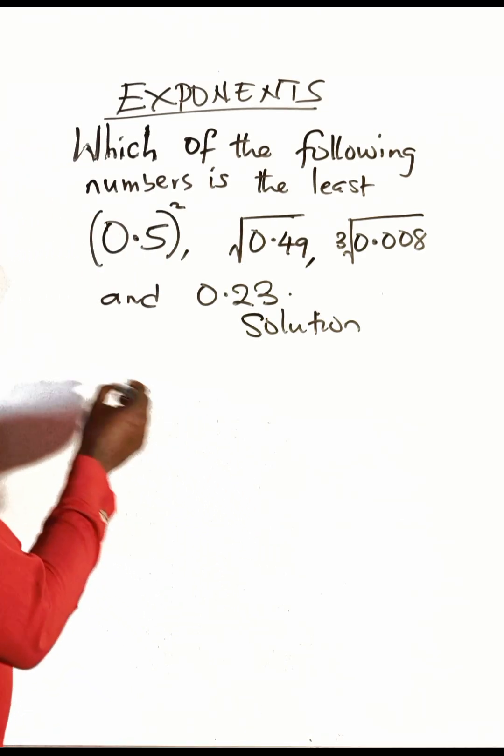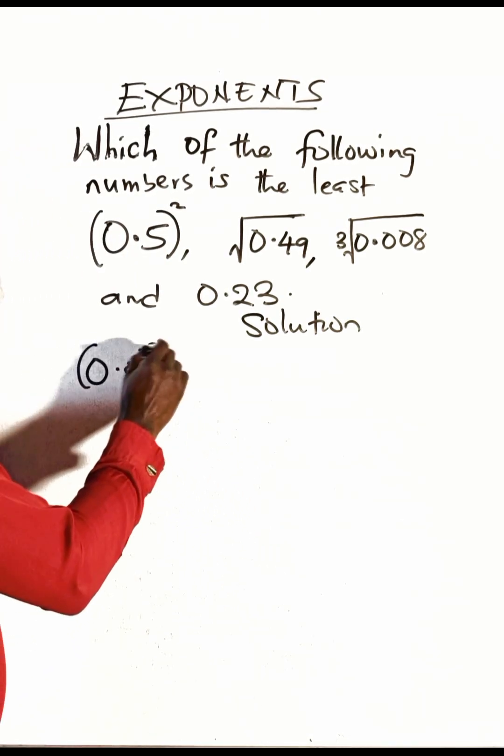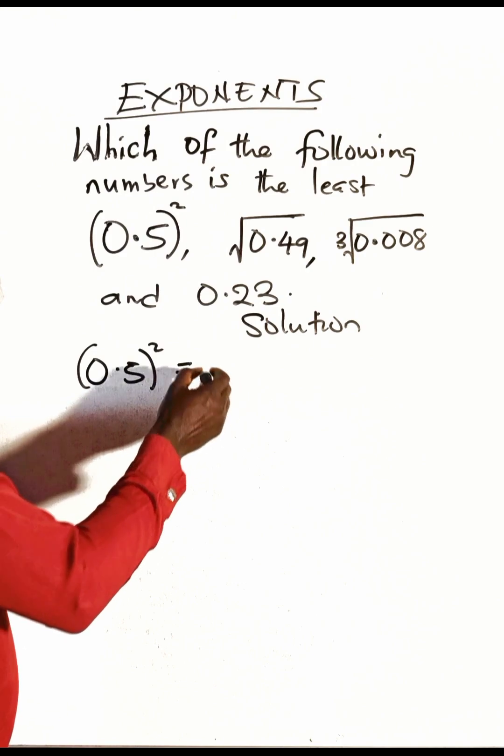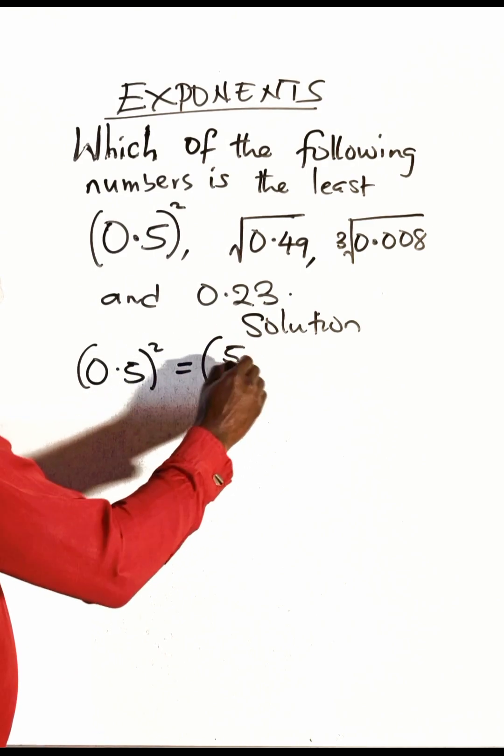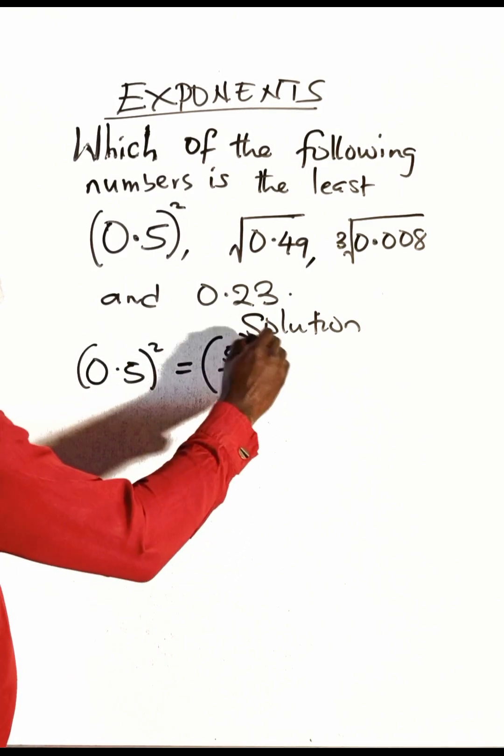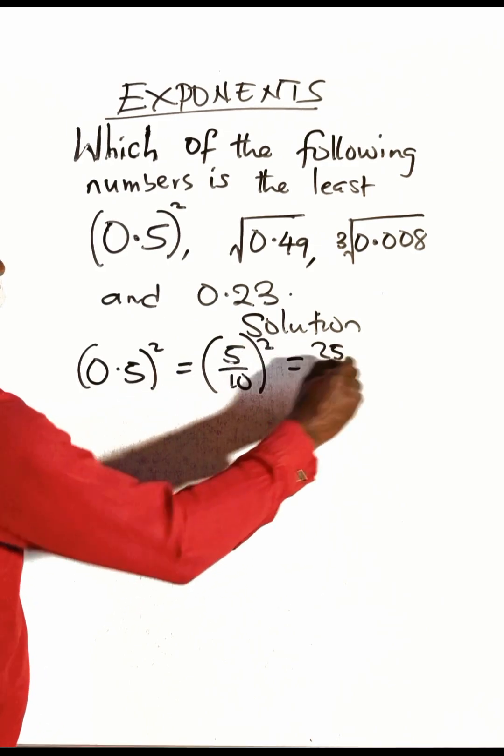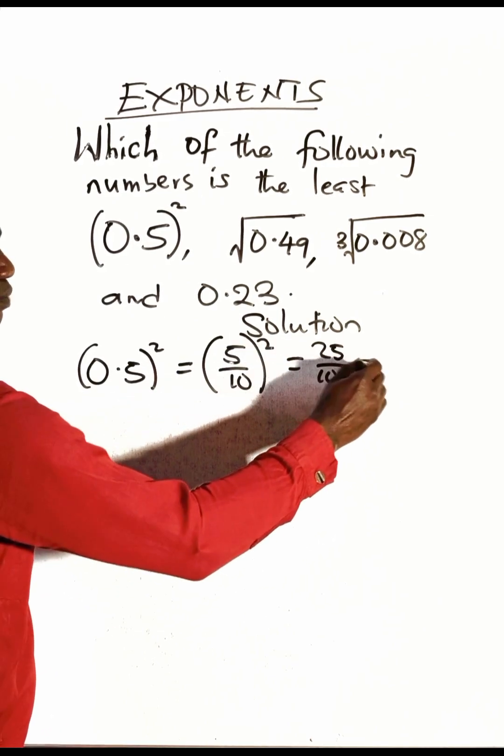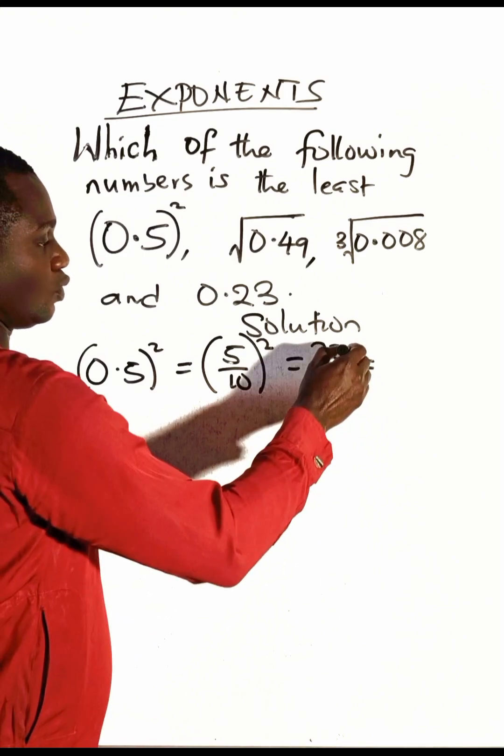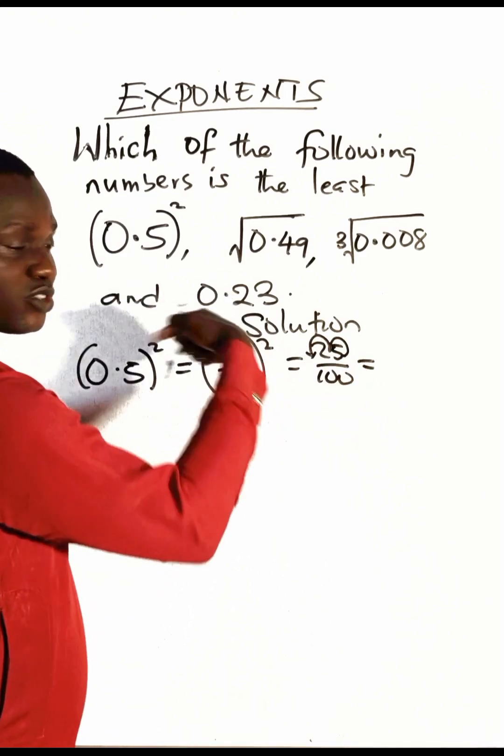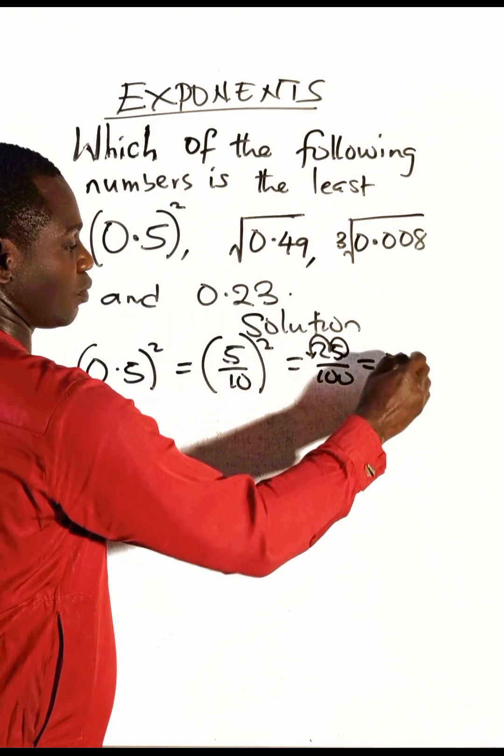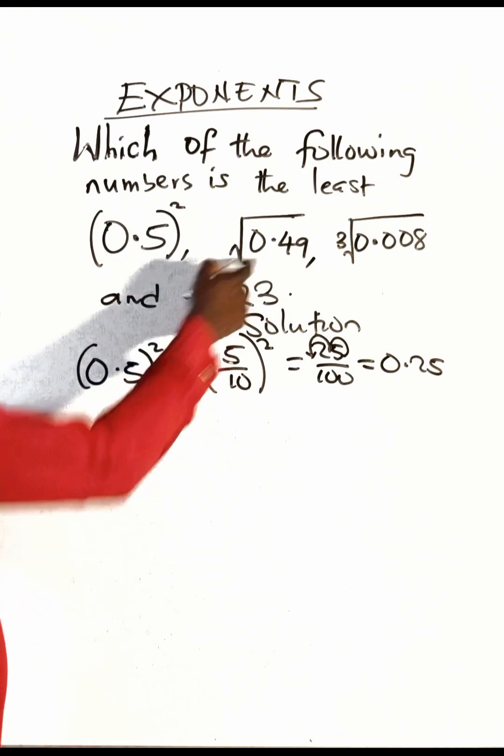Alright, now let's start with 0.5 squared. This can be written as 5 over 10 as a decimal. Then you square it: 5 squared is 25, 10 squared is 100. Changing it back to decimal, you will shift this point two places to the left, which will give us 0.25.